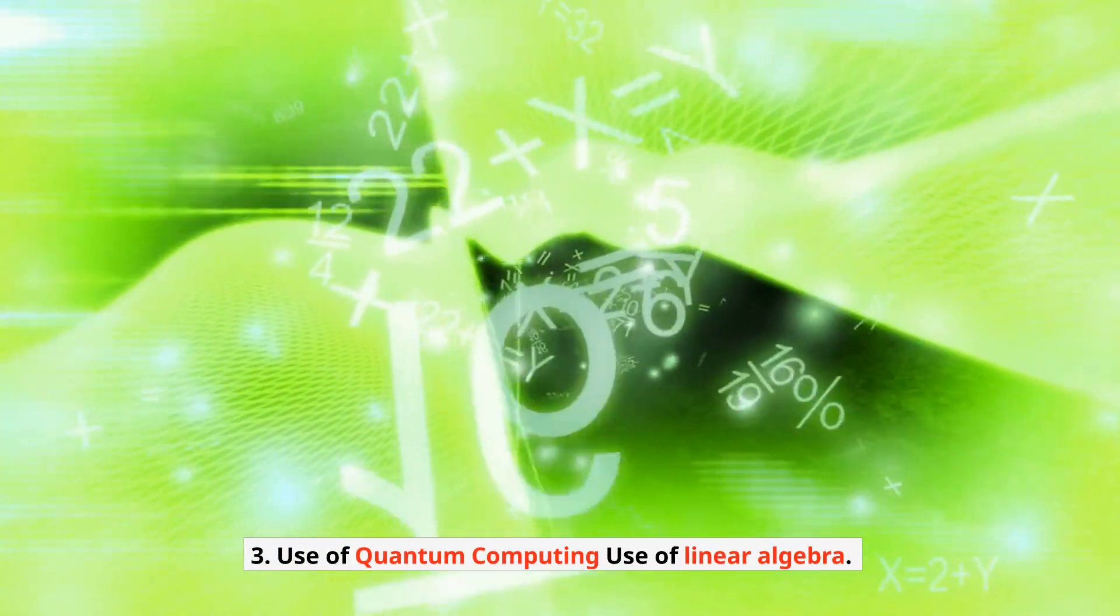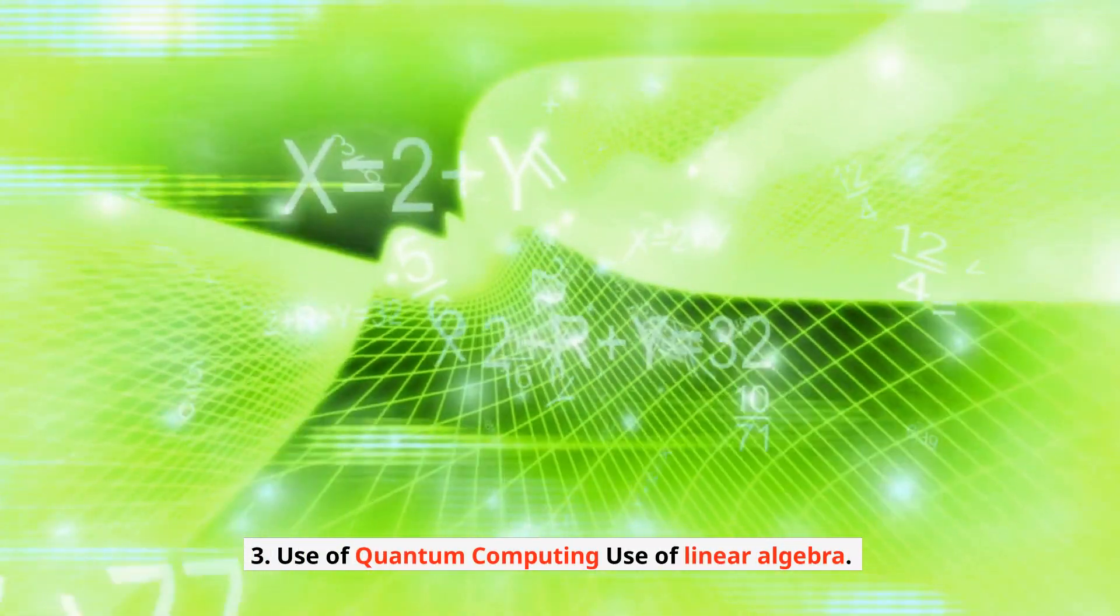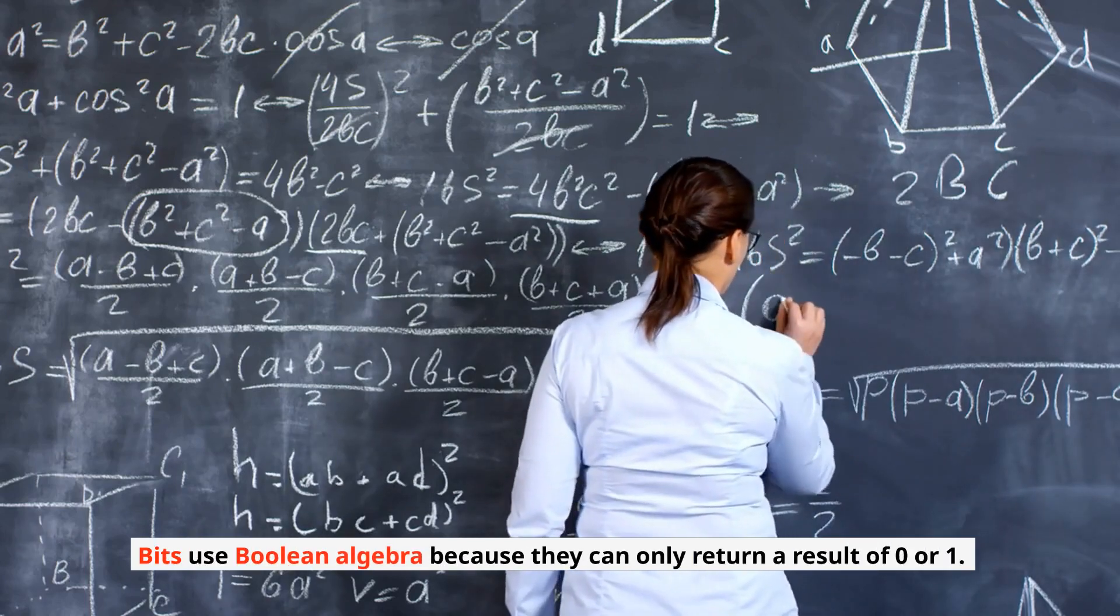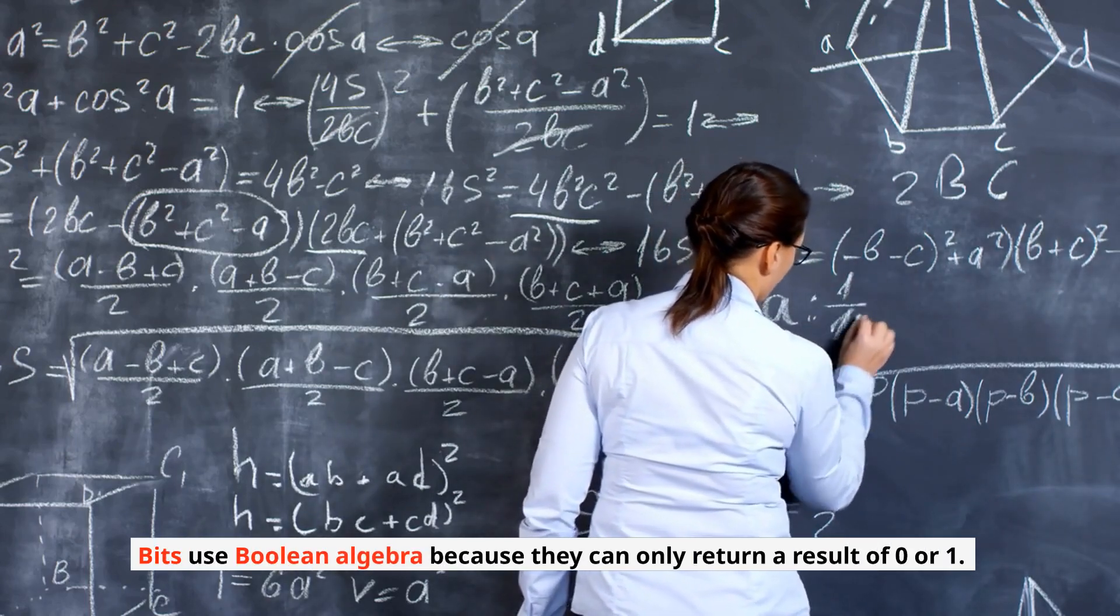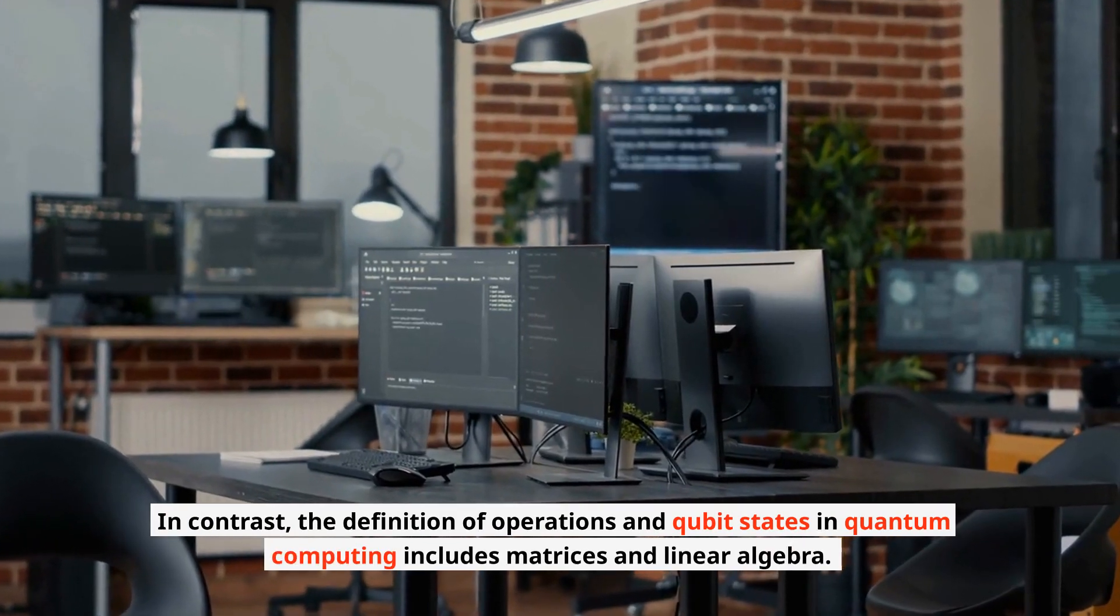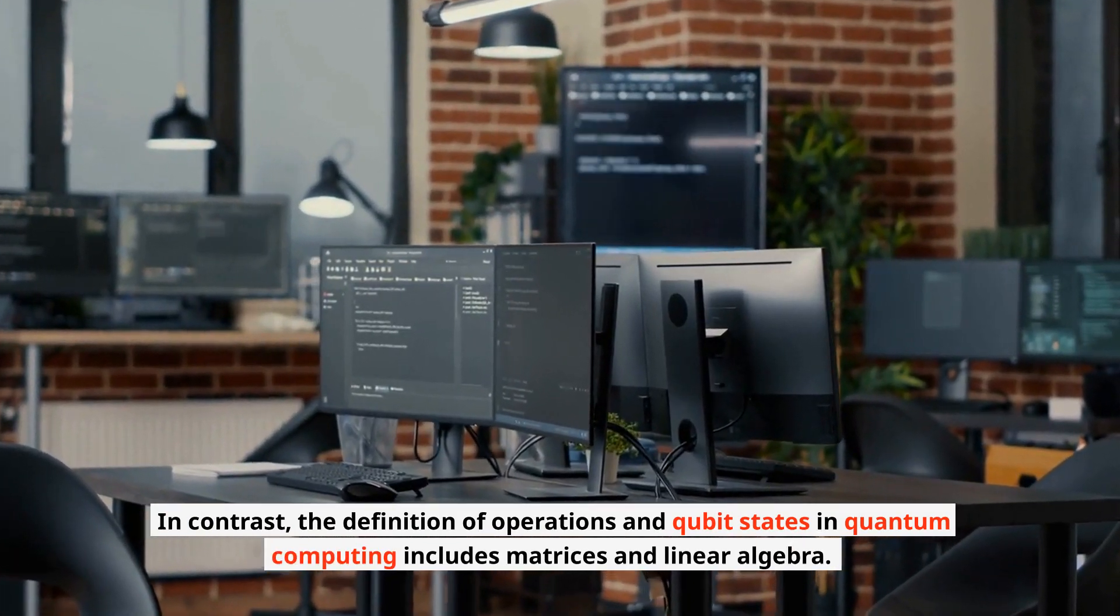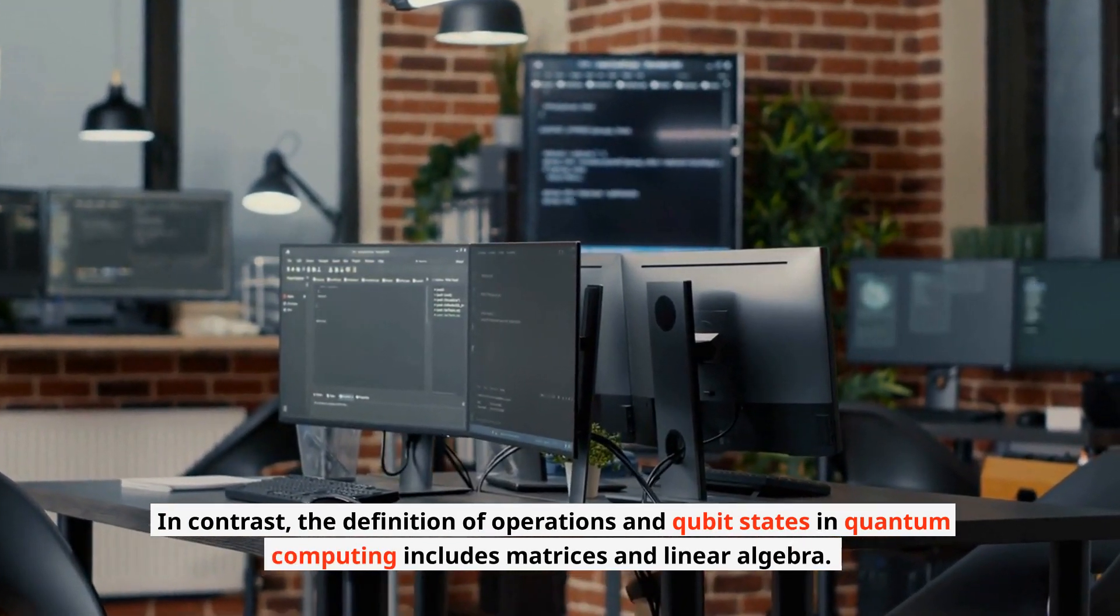3. Use of quantum computing use of linear algebra. Bits use boolean algebra because they can only return a result of 0 or 1. In contrast, the definition of operations in qubit states in quantum computing includes matrices and linear algebra.